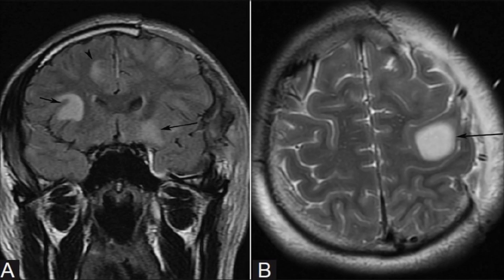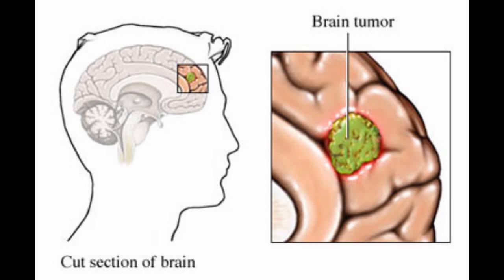Metastatic tumors spread to the brain from some other part of the body and mostly occur in patients who have cancer in the following areas: colon, breast, kidney, lung, skin, and various other places.